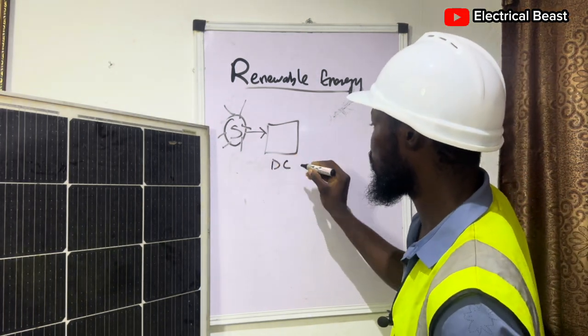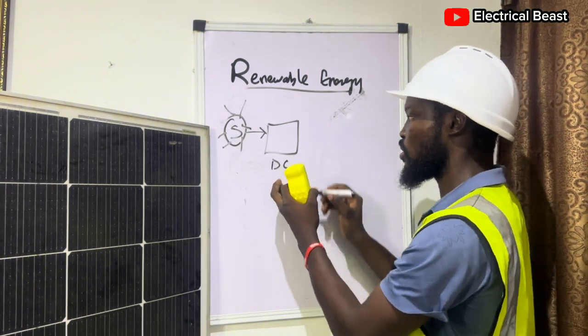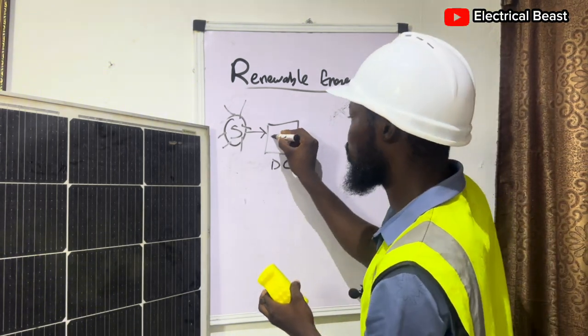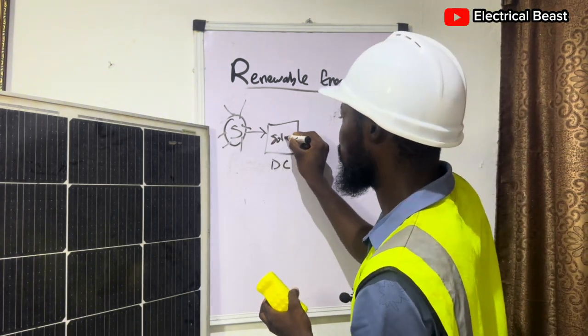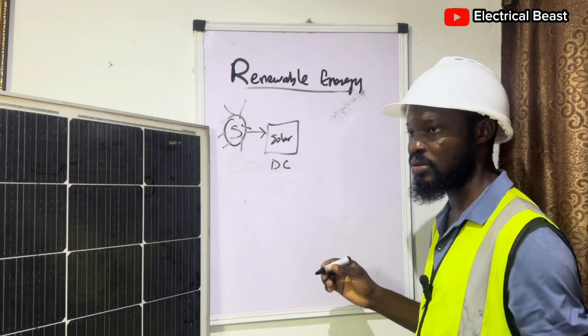This solar panel is able to convert the energy from the sun to direct current (DC). Now there are different types of solar panels.